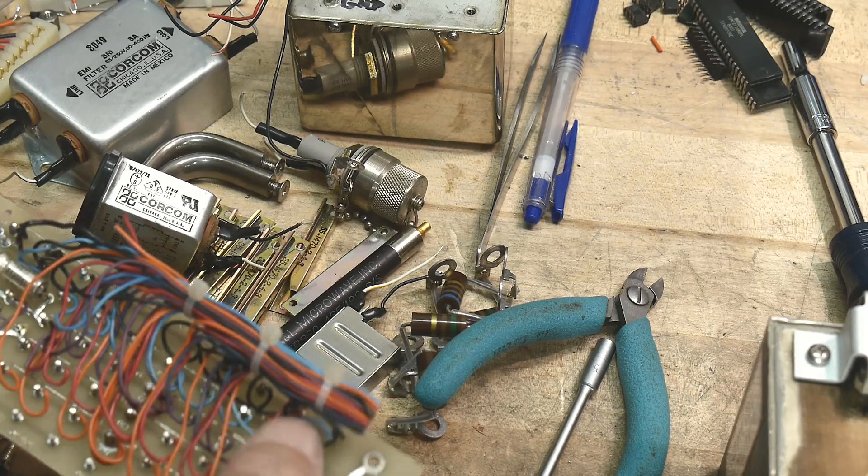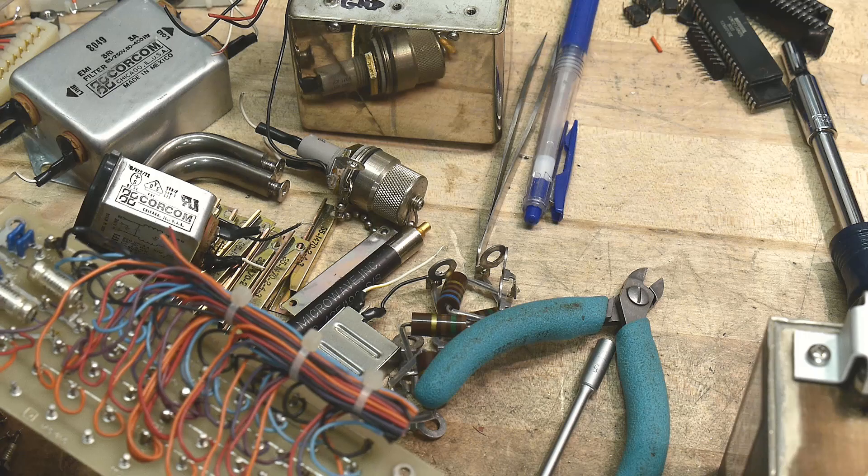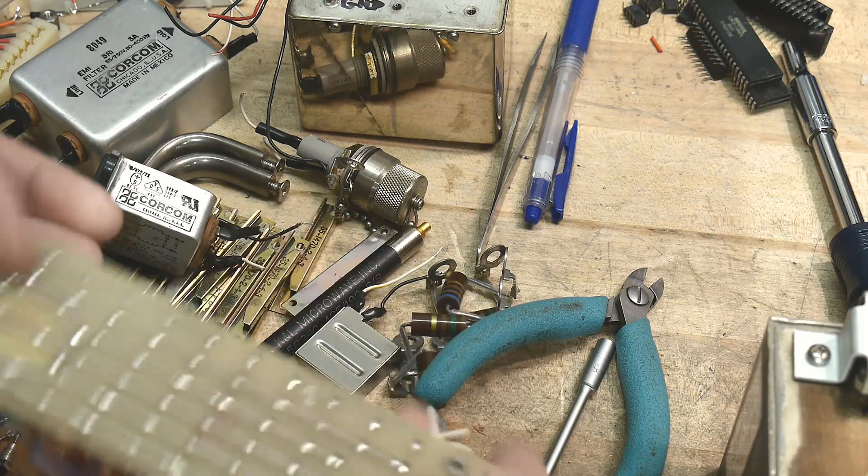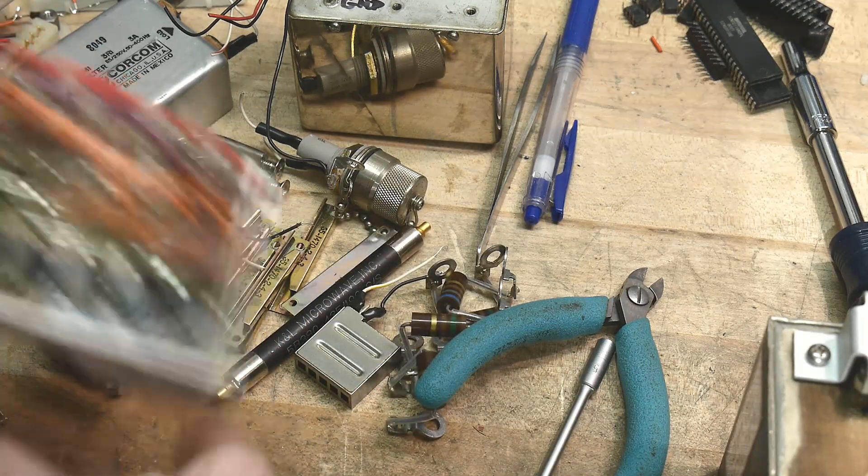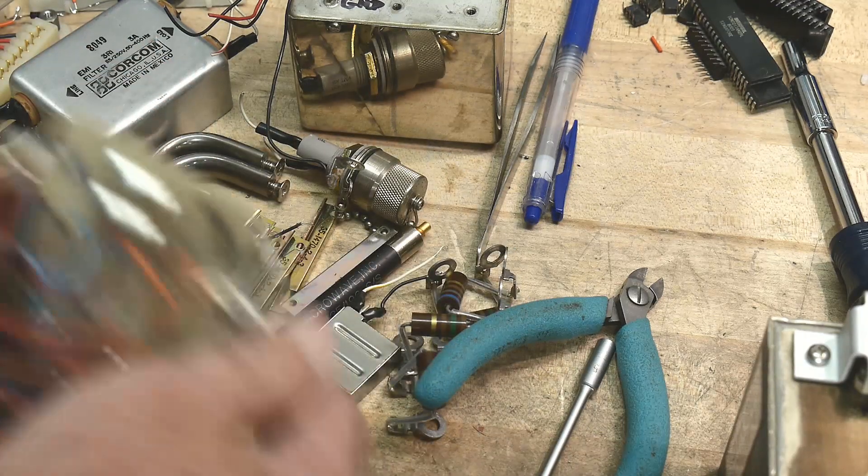There's a plus 15, minus 15, plus 5, minus 5.2, and minus 2.5. Those are all the voltages inside this thing. There's one distribution board here and this is another distribution board. So that's kind of cool.